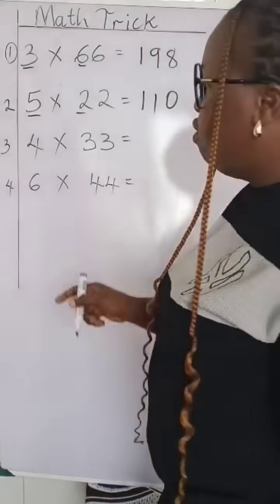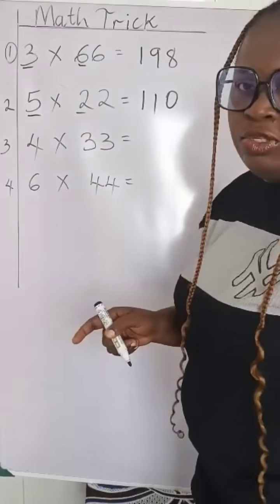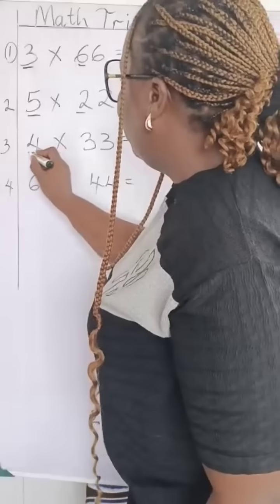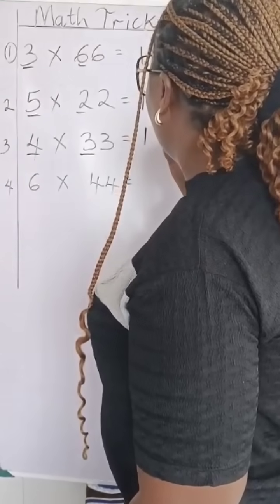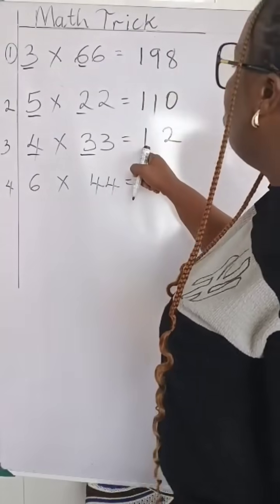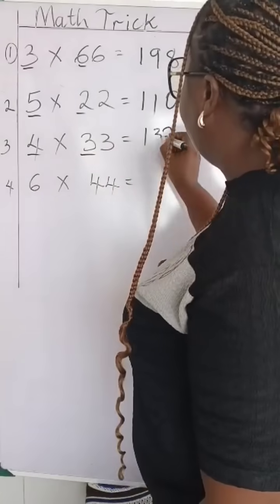Number 3, we'll have 4 multiplied by 33. 4 times 33, we'll have 4 times 3, which is what? 12. Then you add 1 plus 2. It will give us 3.